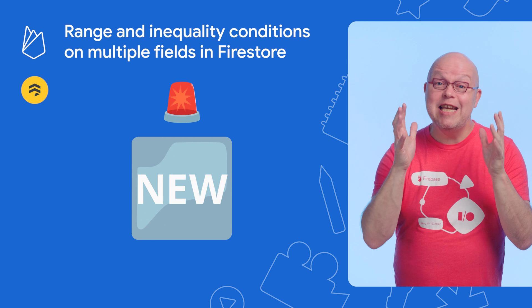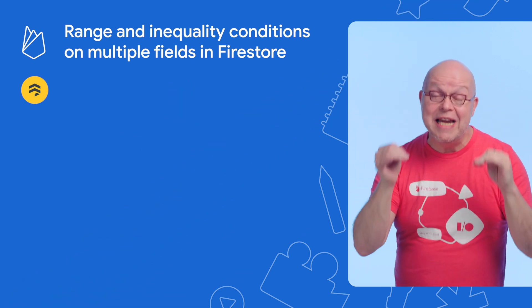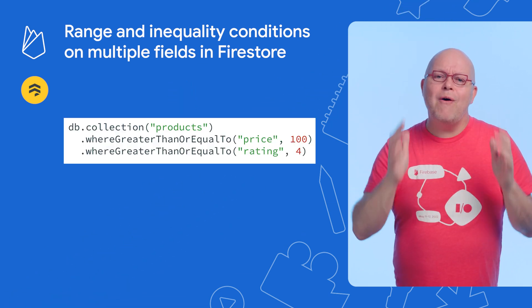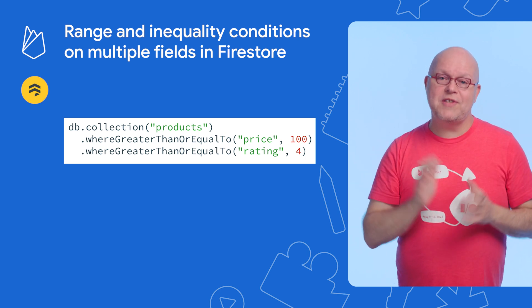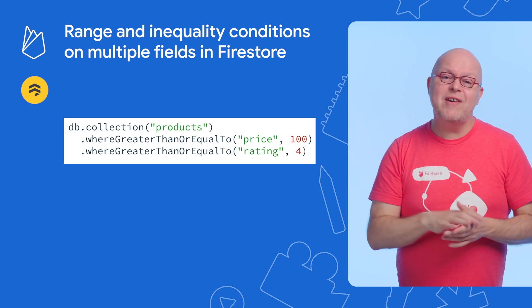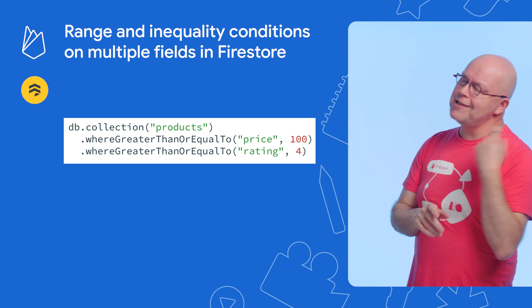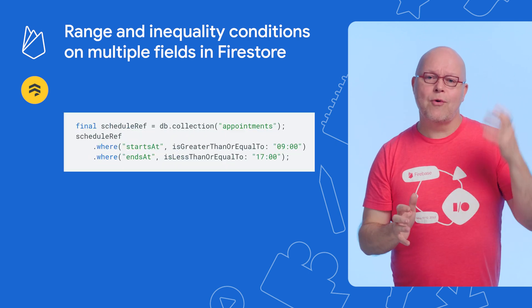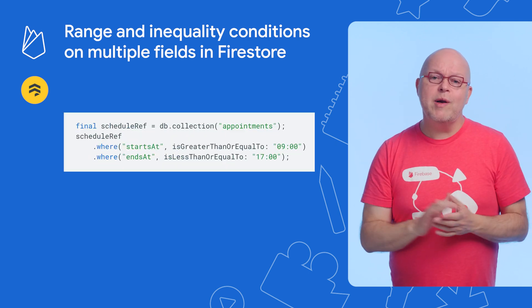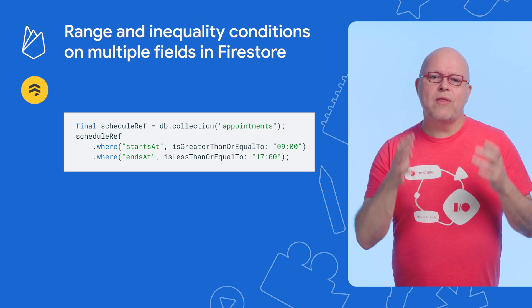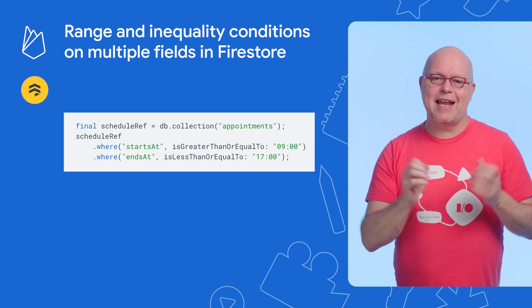Finally, we have a sneak preview of a feature that is rolling out to Firestore as we speak. You can now have range and inequality conditions on multiple fields in a query, which allows you to write queries that were previously impossible. For example, a query for appointments from 9 to 5 usually required that you use appointment slots, but now you can write it with range conditions on the start and end fields. This new feature has a lot of implications for the types of queries you can write for Firestore, their performance guarantees, and their costs. Check the written release notes, the updated documentation, the blog post, and other materials on this topic.